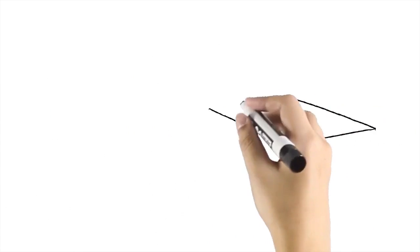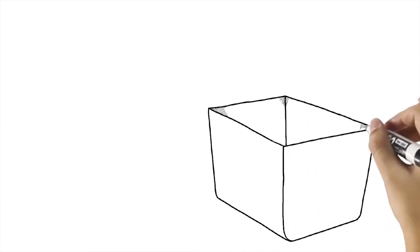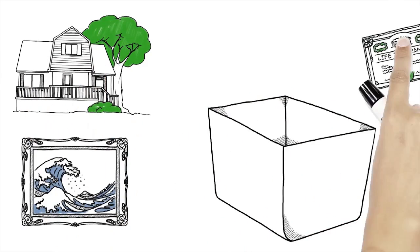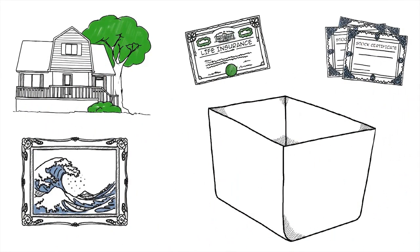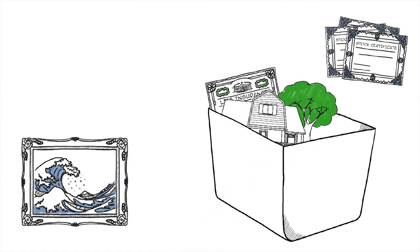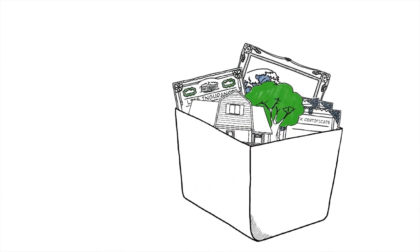How do trusts work? Trusts are like containers you can put things into. You, the grantor, can place assets like your house, life insurance policies, investments, and other possessions into a trust.